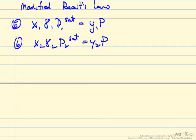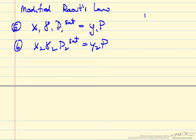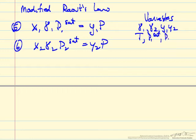The question is how many variables do we have? We don't know gamma 1 or gamma 2, we don't know y1 or y2, temperature is one of the main things we're trying to solve for.